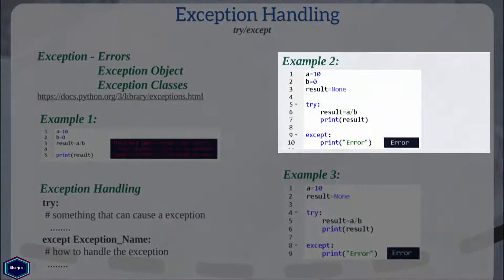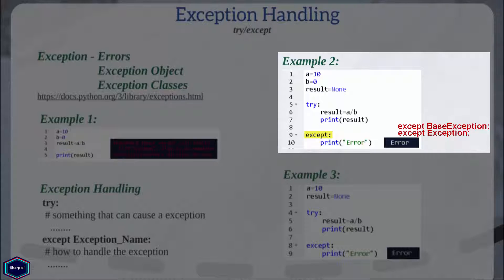Let's see an example of a try/except block. In this example, the try block contains suspicious code in which I divide variable a by zero. The except block contains the code that will be executed when an exception occurs. The except statement without any additional parameters catches all exceptions. I can even write BaseException or Exception after the except statement — both are parent classes from which all other exception classes inherit, so all three statements are equivalent. As you can see in the output, Python executed the code from the except block and our program didn't crash.